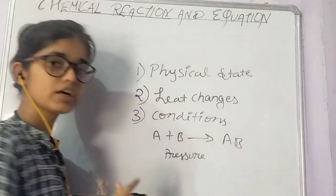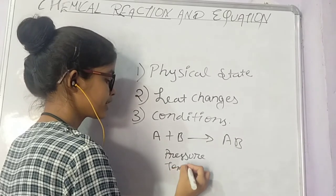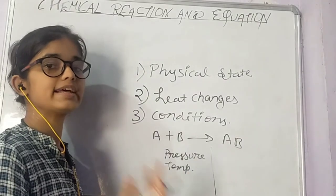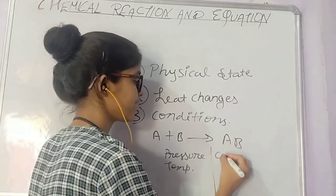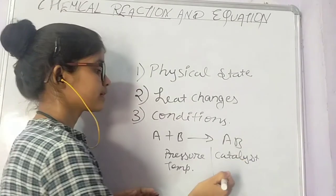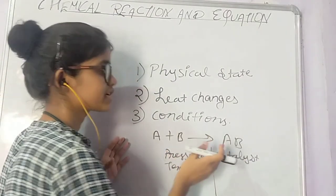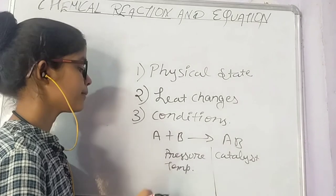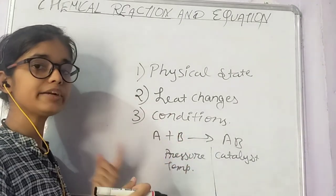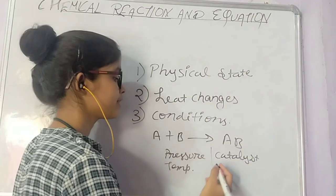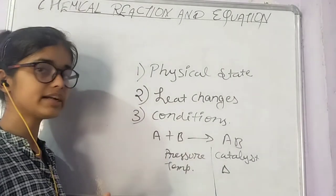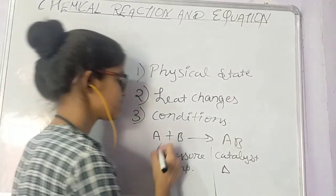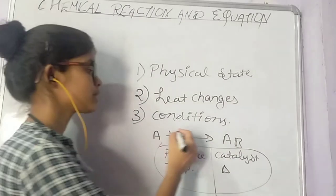The third information we need to provide in an equation is the condition. For example, how much temperature we are using. If we are using a catalyst or enzyme — a catalyst is a substance used to enhance the speed of a reaction — we write it above the arrow. If we are providing heat, we represent it with a triangle. If we are doing electrolysis, we also write it above the arrow.